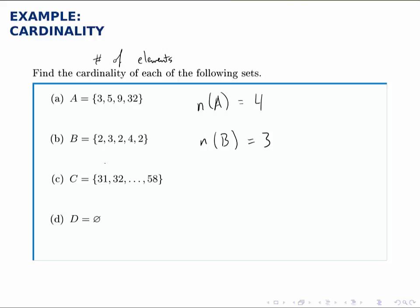Now I'll caution you, you may be tempted to say 58 minus 31 equals 27 and say that there are therefore 27 elements in the set. However, this is not correct. There are actually 28 elements.